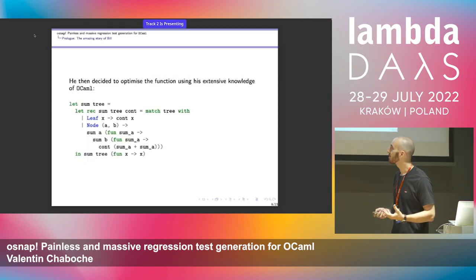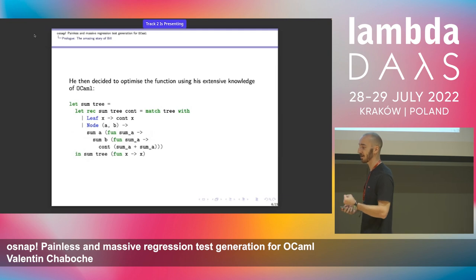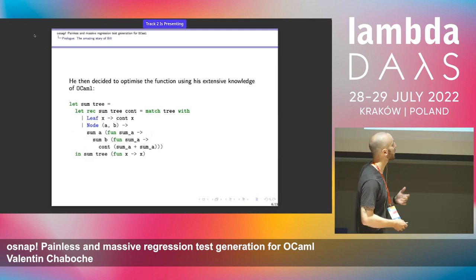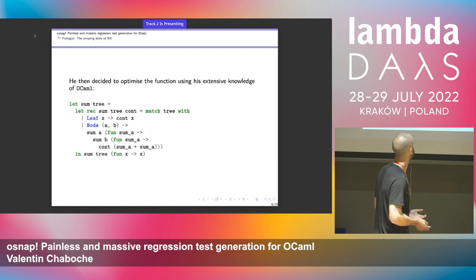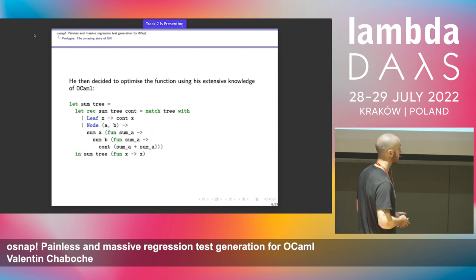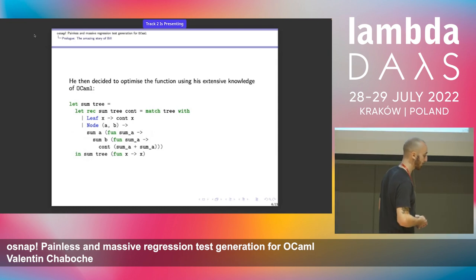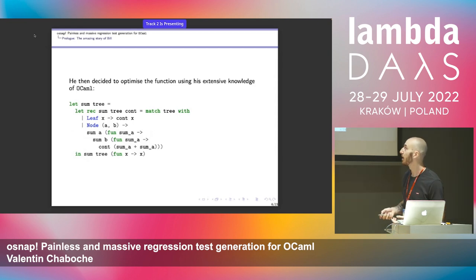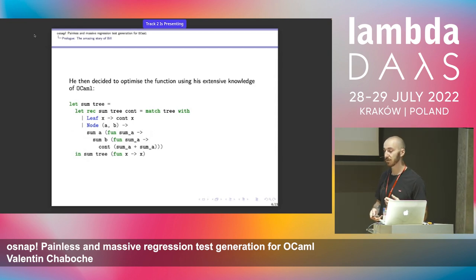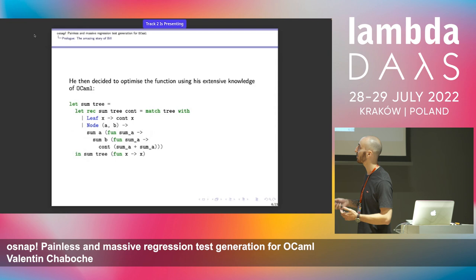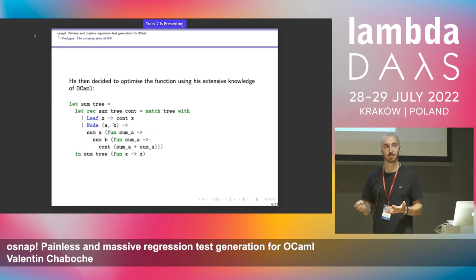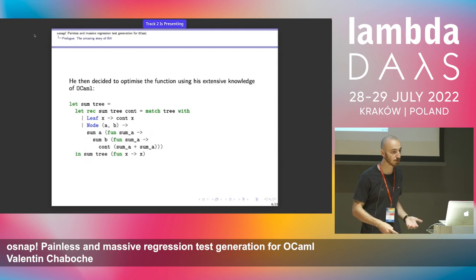But Bill is like a master programmer — he loves OCaml, he knows everything about it. So he wants to optimize the function. He will try to use the tail-call optimization in OCaml, and to do so, he will transform the function into a CPS-style function, where instead of doing the recursion naively, he puts sub-results into continuations.